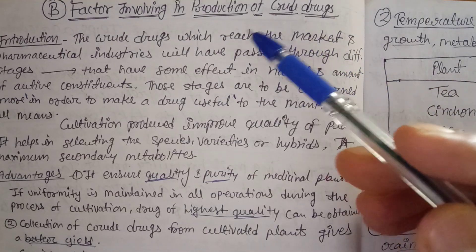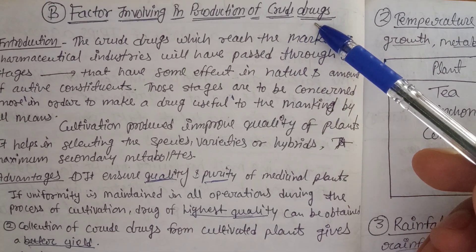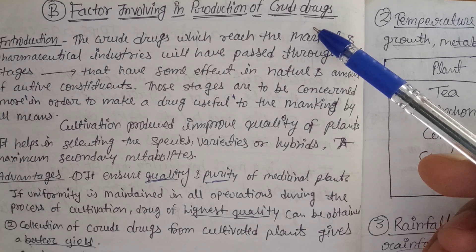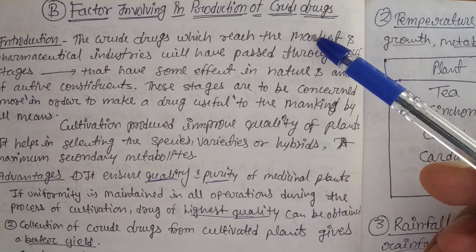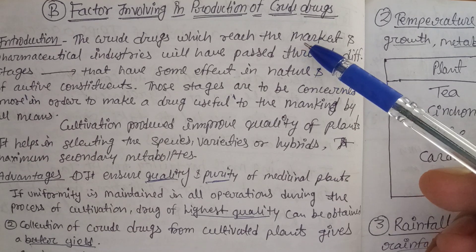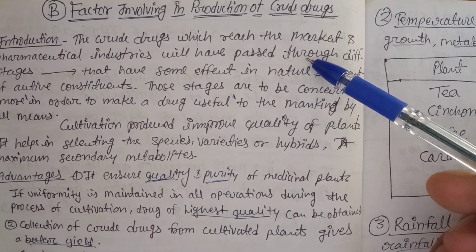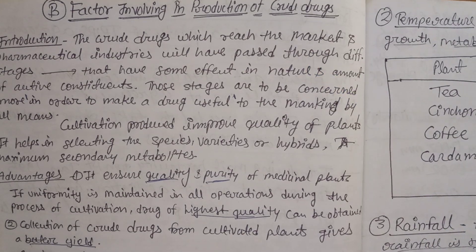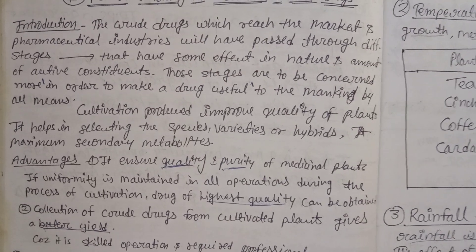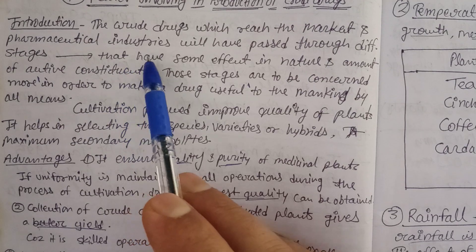We are going to discuss the factors involved in the production of crude drugs, or the cultivation of medicinal plants. In the last class we discussed what cultivation of medicinal plants basically is. Now we will describe the factors that may affect cultivation — altitude, temperature, rainfall, irrigation — and these we are going to cover in full detail. Go through the video and you will get the idea of how to write in the exam.